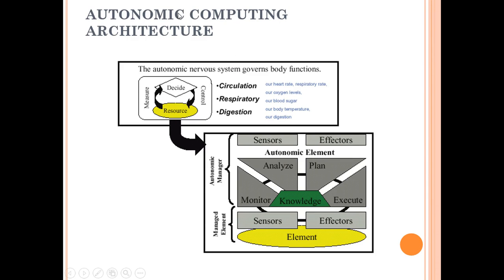This is the autonomic computing architecture. The autonomic nervous system governs body functions. We have circulation, respiration, and digestion. Circulation includes heart rate, respiratory rate, oxygen levels, blood sugar. Respiratory and digestion all have their functions.